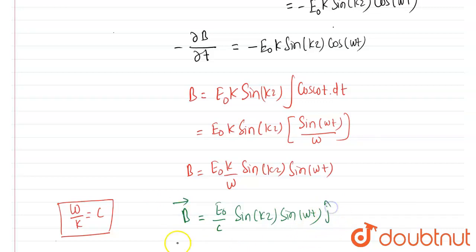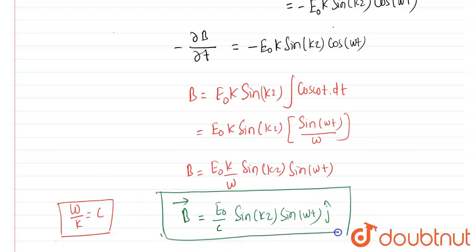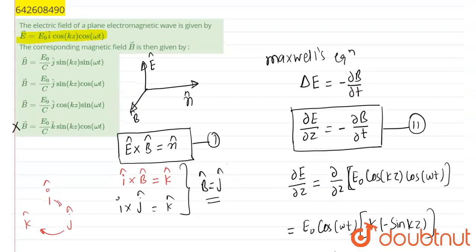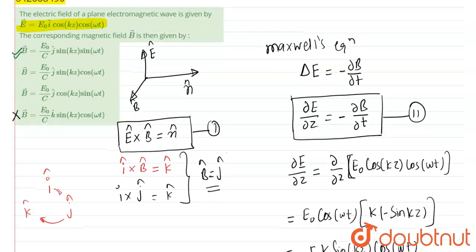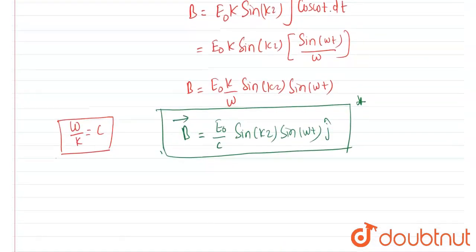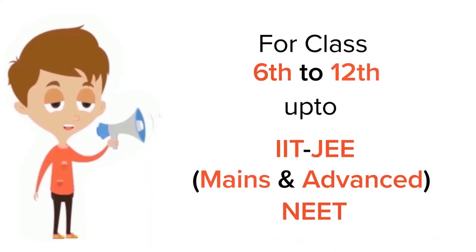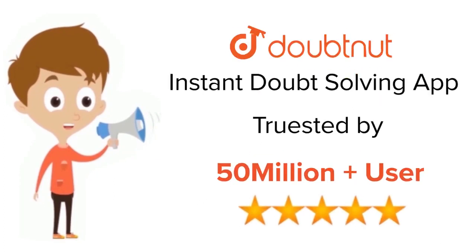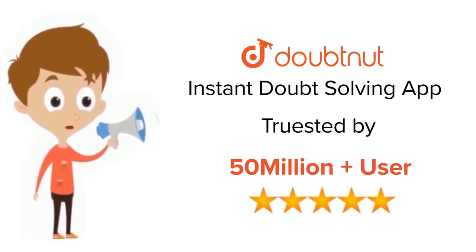So the final answer is option A, which is correct. For class 6 to 12, IIT JEE and NEET level, trusted by more than 5 crore students — download the Doubtnet app today.